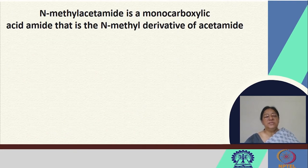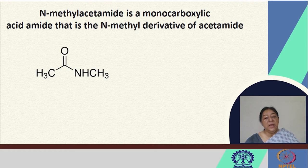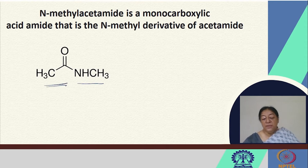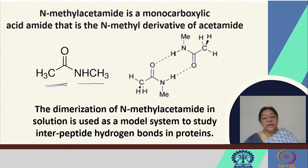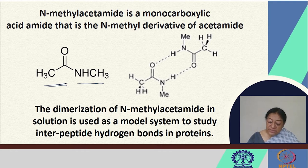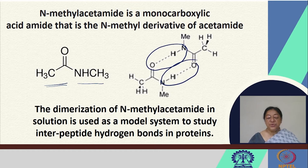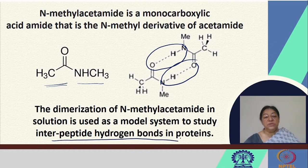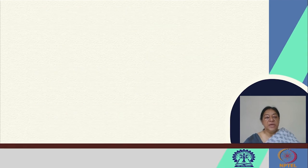In many studies, N-methylacetamide, which is a monocarboxylic acid amide — an N-methyl derivative of acid amide — is used as a model system. The dimerization of this molecule is a model to study the dipeptide, because the C=O...NH group gives interpeptide hydrogen bonds in proteins. This makes it an important and commonly used model system in many studies.